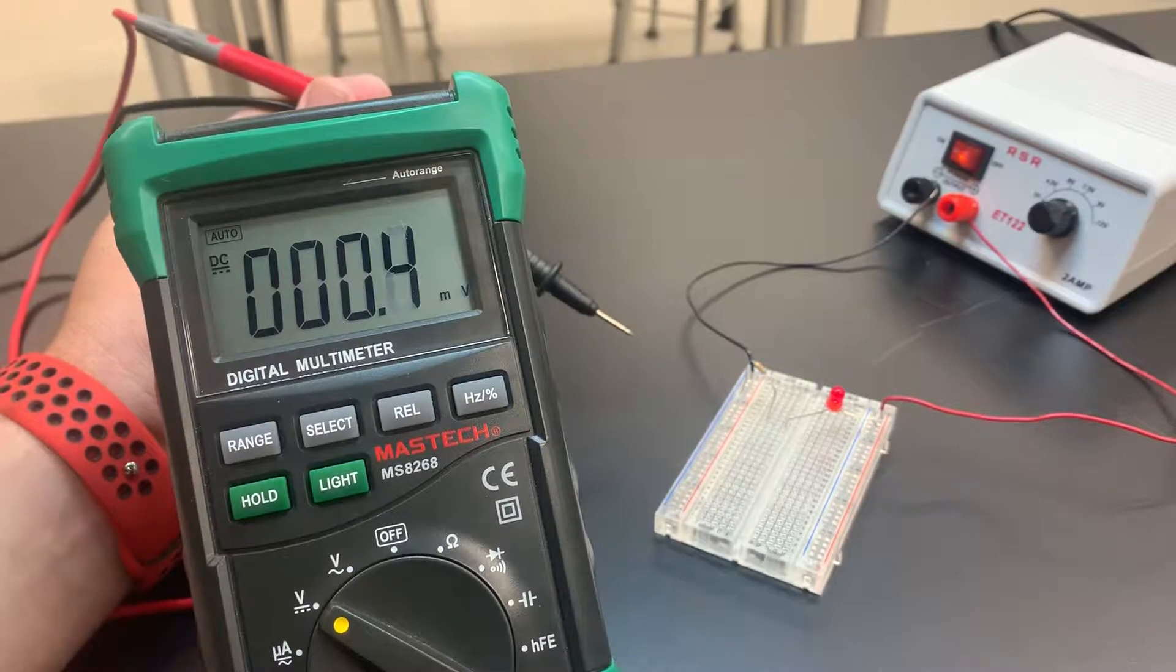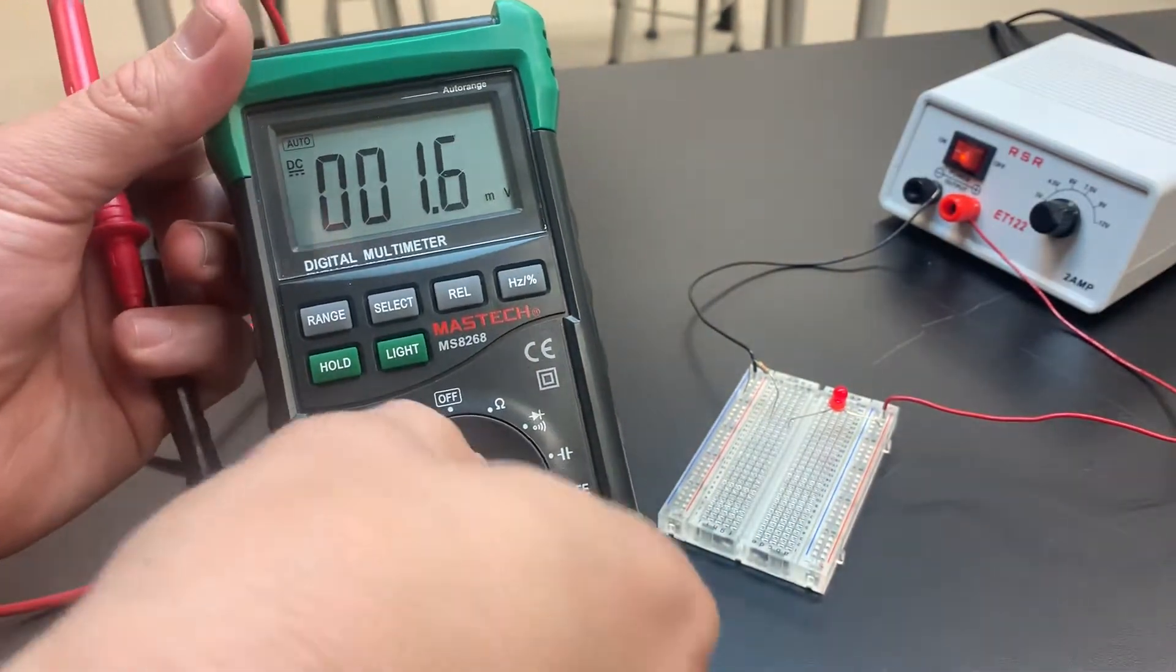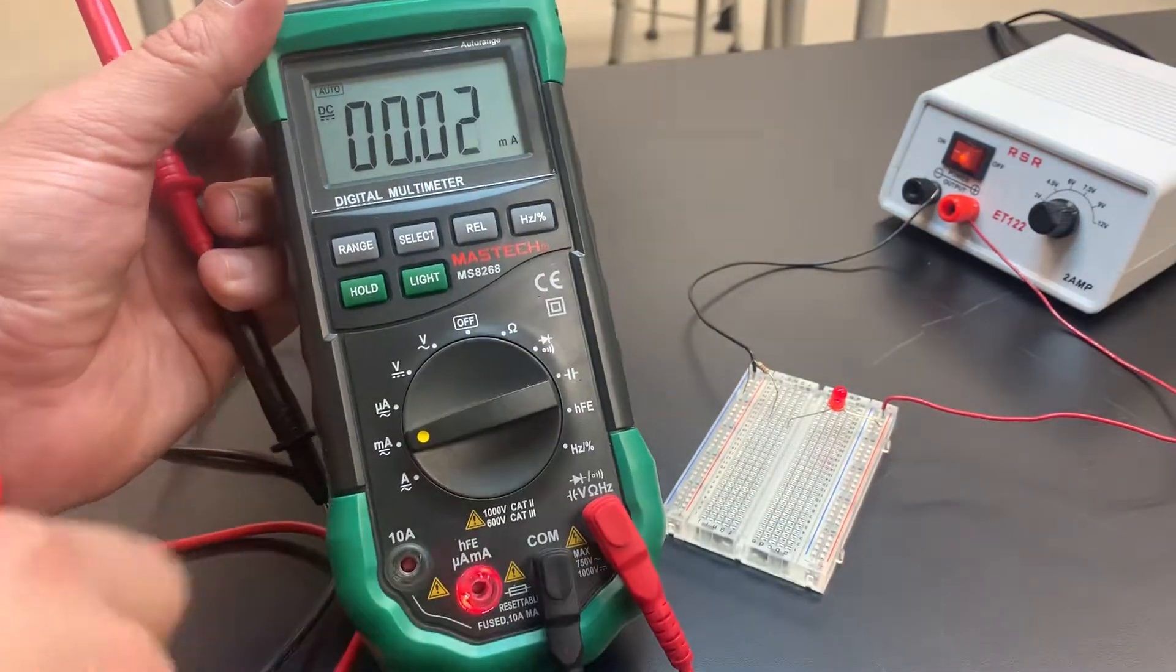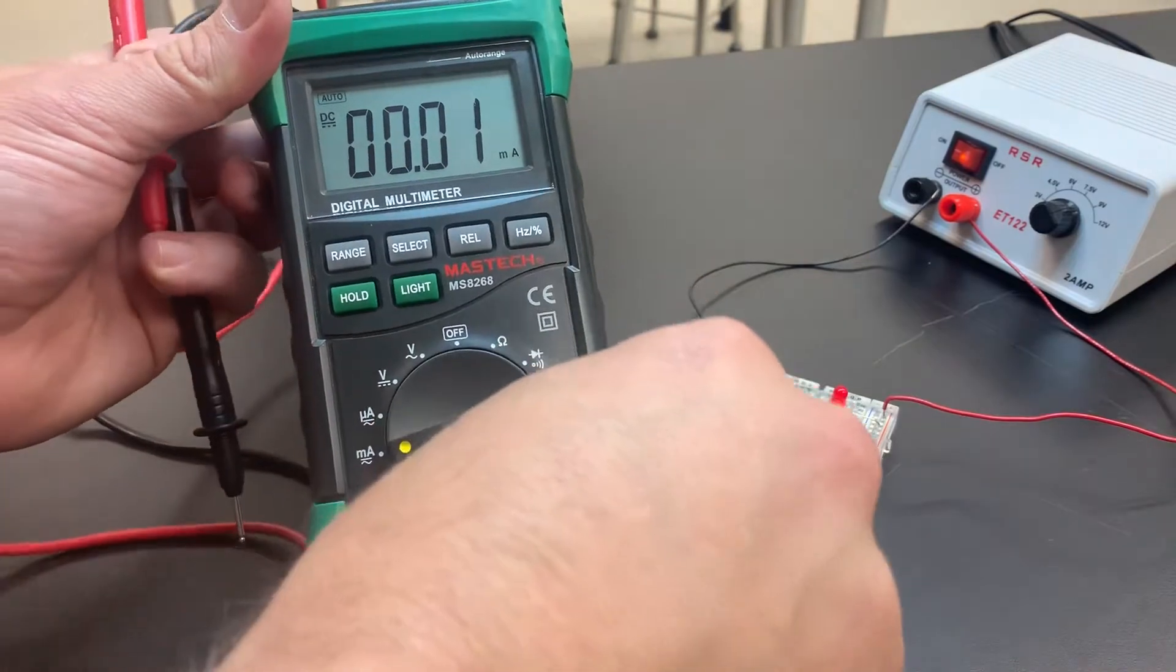Now let's measure our current. So on my multimeter, I'm going to move it down. Our current I already know is in milliamps. So I'm going to move it down to milliamps and notice it wants me to move the red over here.